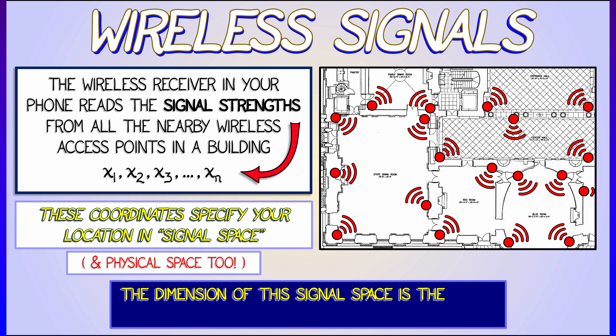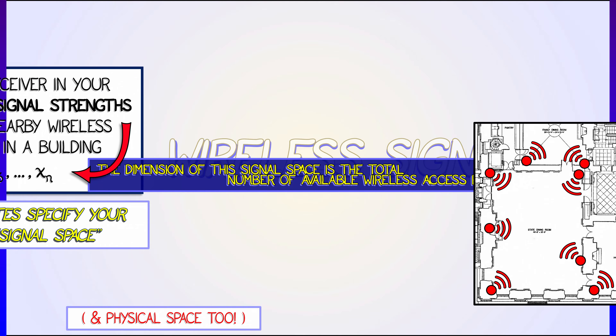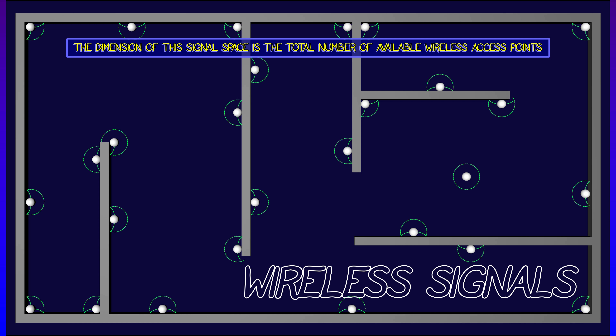Here's the thing: the dimension of this signal space is the total number of available wireless access points in the building. Even if most of them are registering a signal strength of zero where you're at right now, as you move around in a building, the coordinates in this signal space are changing.